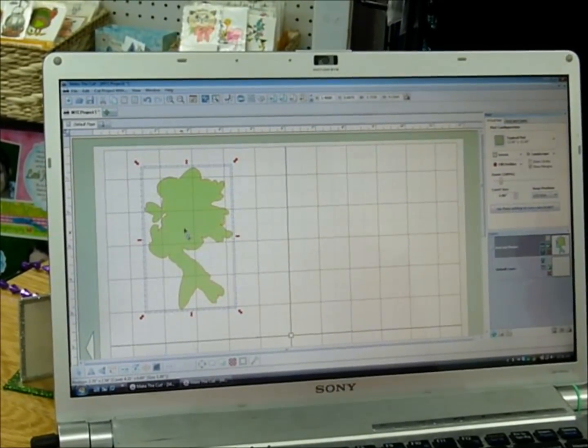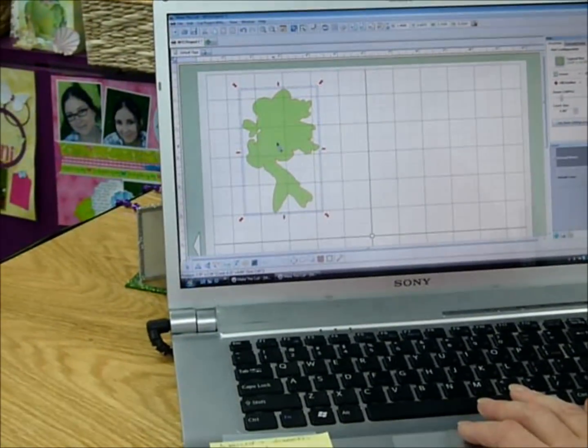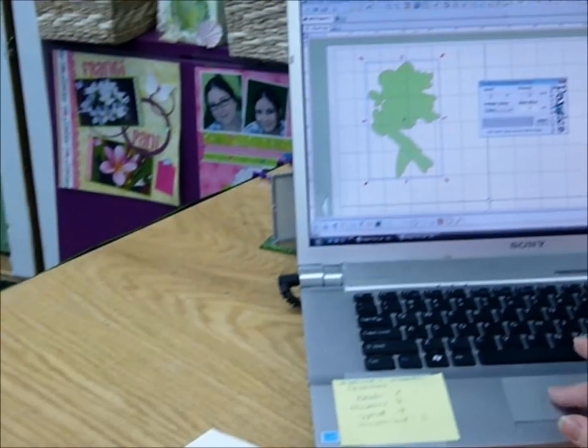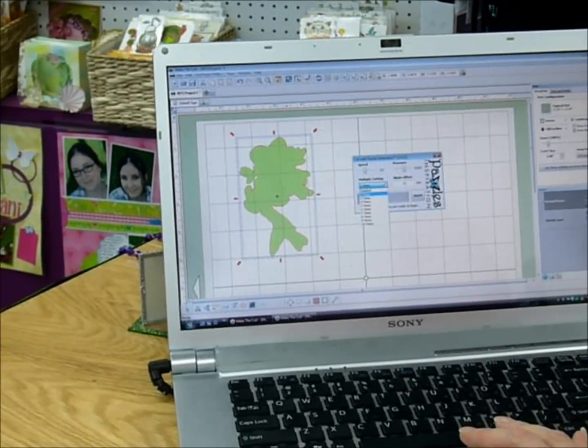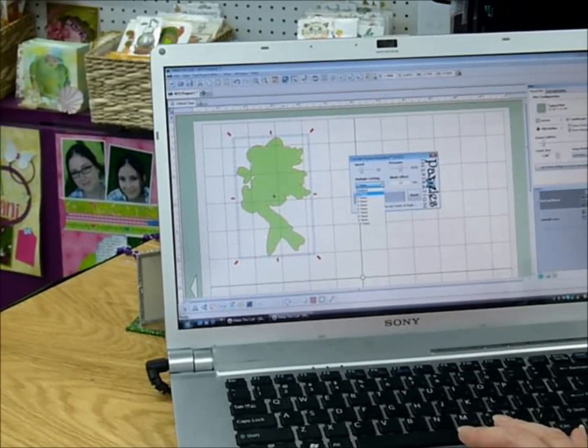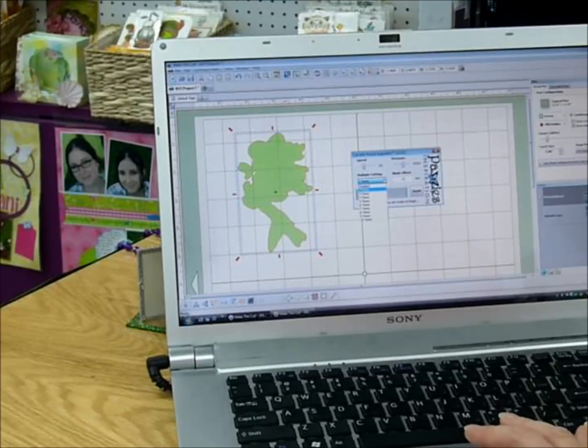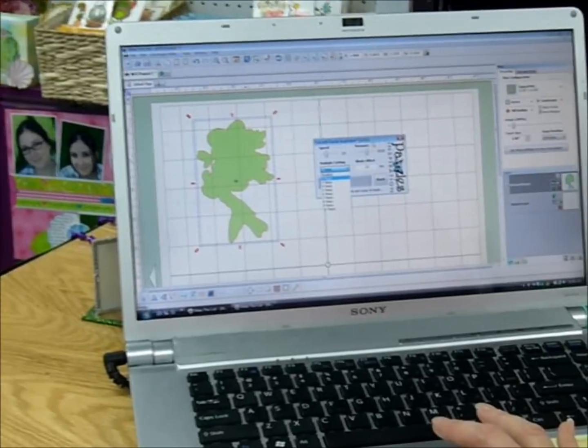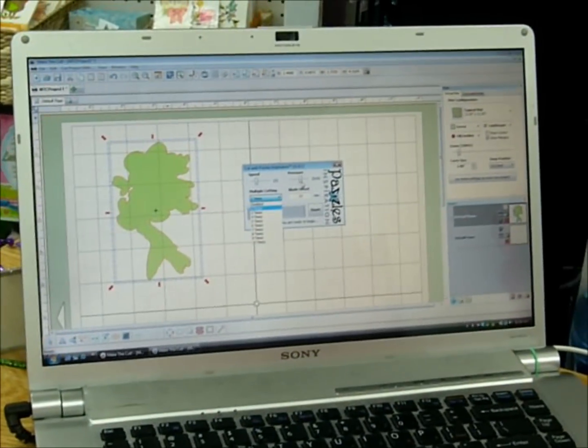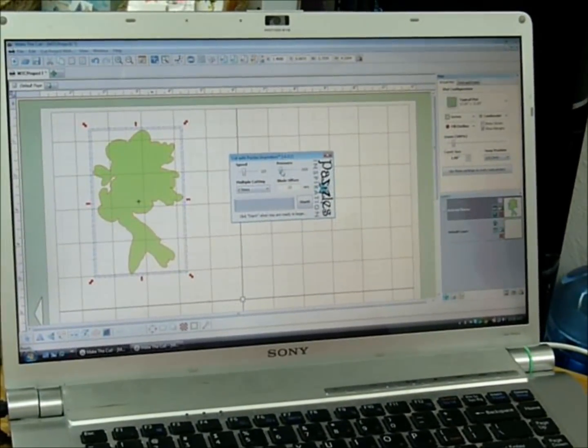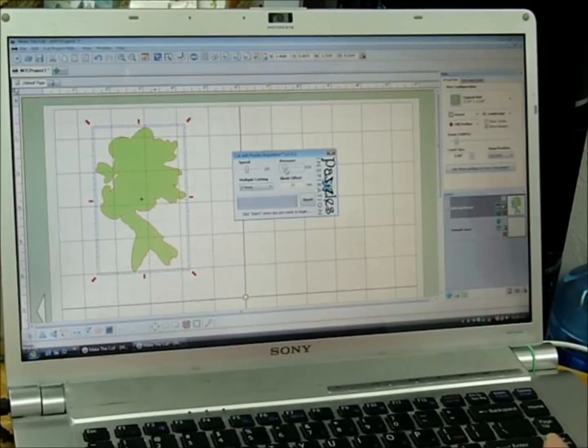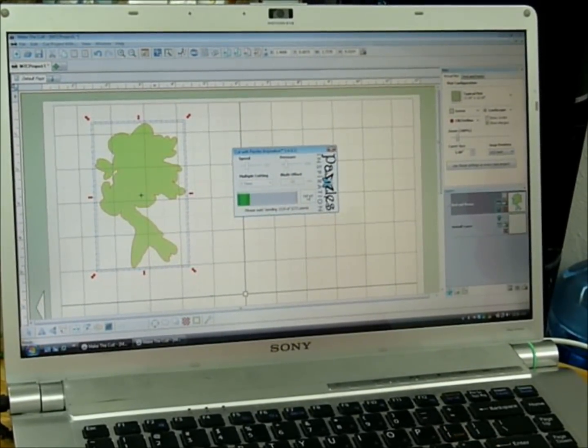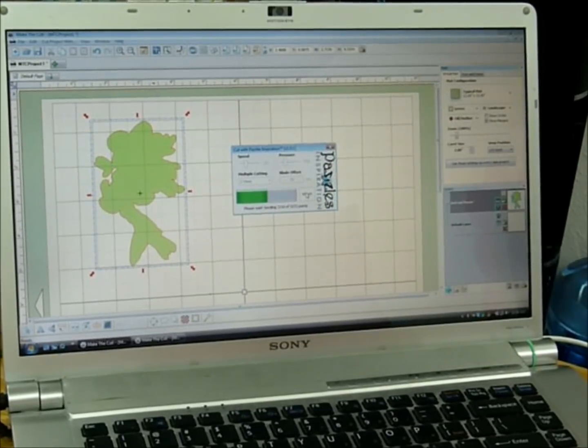I've already got my mat installed into my machine. It's already put in so I'm going to go ahead and tell it to cut. Just keep in mind that your machine may be a little bit different than mine. I'm going to make sure that all of my settings are at the right setting here. Slide set two, pressure nine.